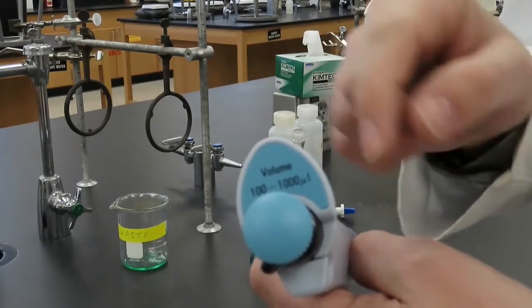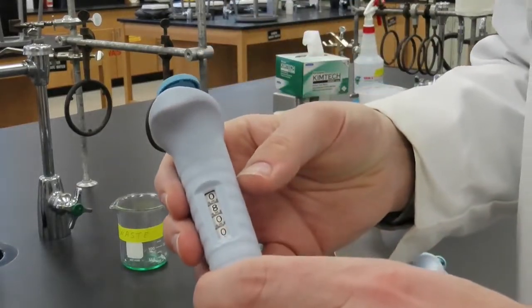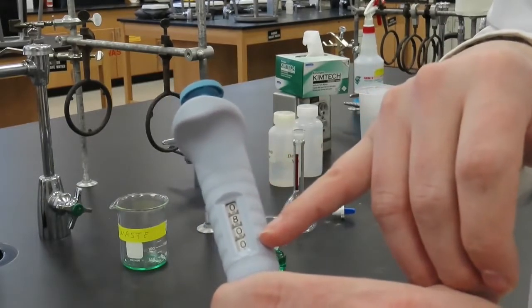For the smaller pipette, the black digits on the display represent microliters. Therefore, the volume is currently set at 800 microliters.